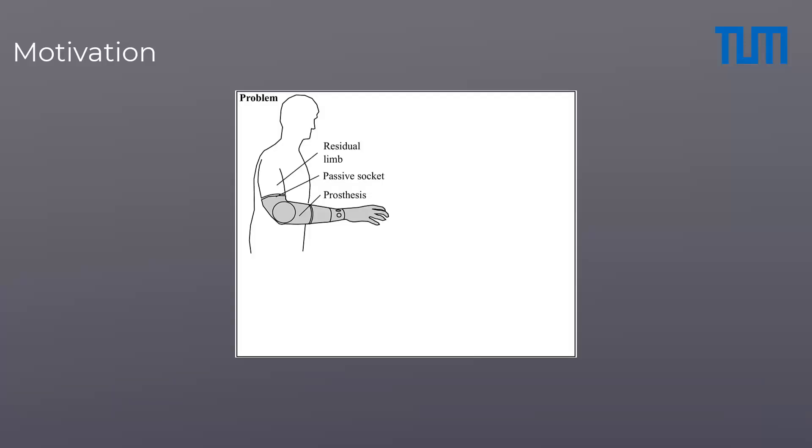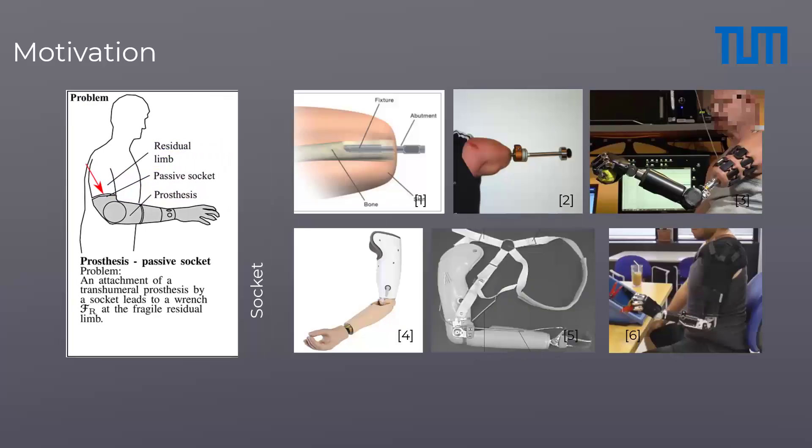One fundamental challenge in the design of a prosthesis is to connect the device to the human body. Simply by the laws of physics, a wrench occurs in the attachment point between prosthesis and residual limb, which may be harmful for the human. According to the state of the art,